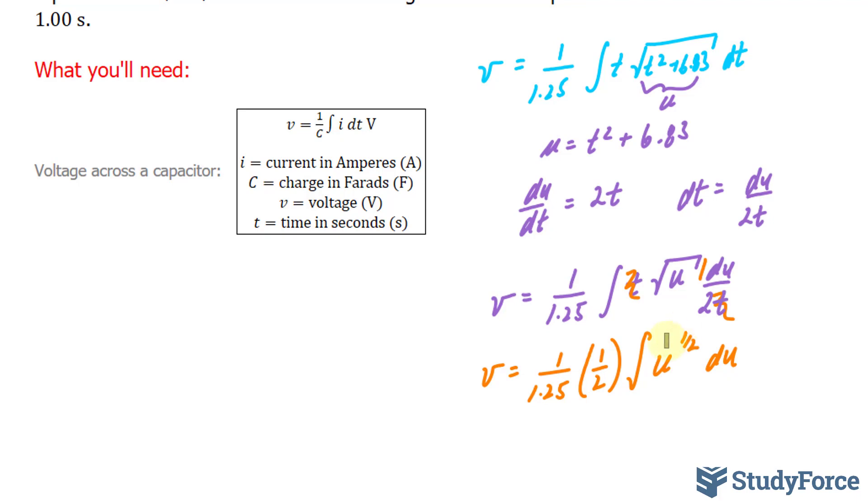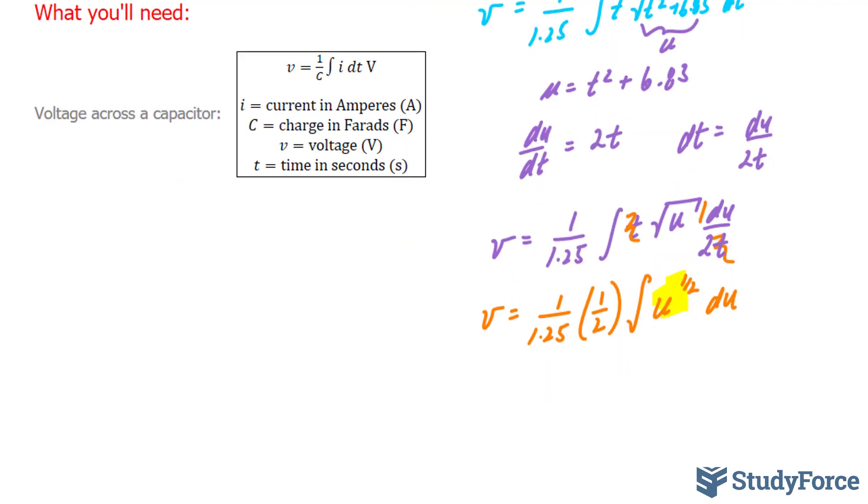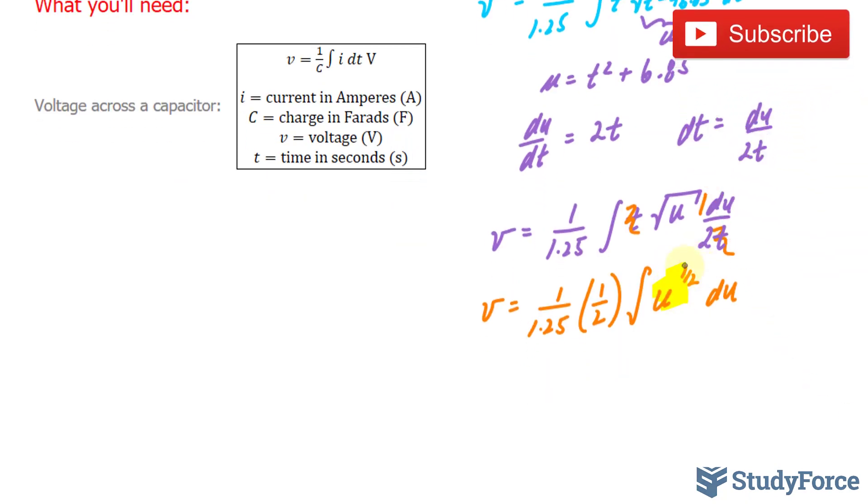This now is easier to integrate than what we had originally. The integral of u to the power of 1 over 2 is u to the power of 1 over 2 plus 1, and the sum of 1 over 2 plus 1 is 3 over 2, giving us the following equation.